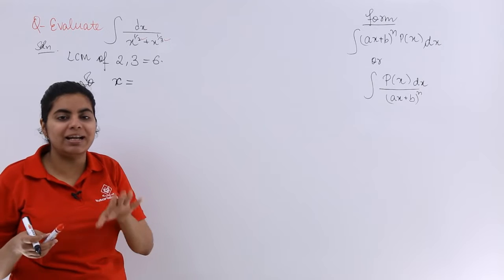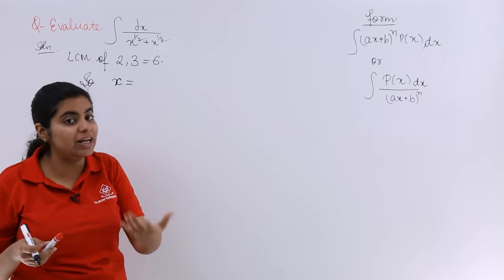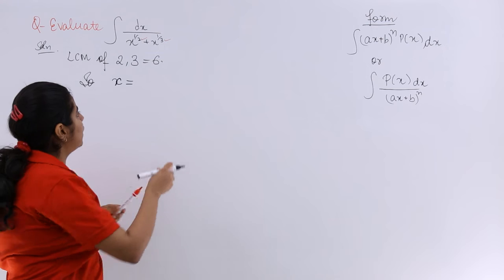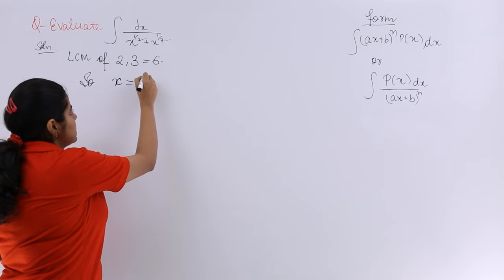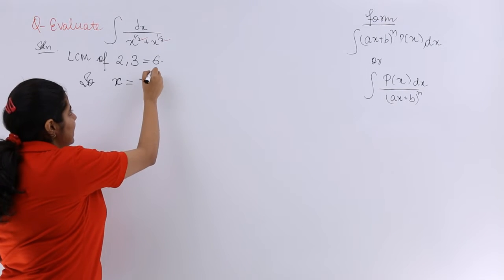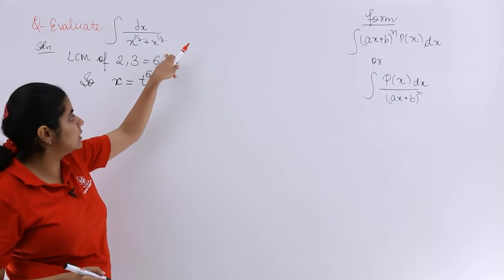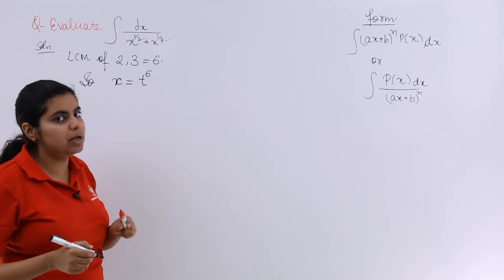We want a whole number or a natural number, not a whole number, probably a natural number so that the fraction goes away. So what I do is, I substitute my x as t raise to the power, that what is the LCM. Now see my question changes.